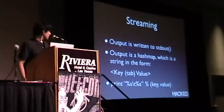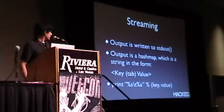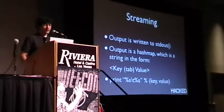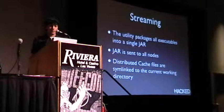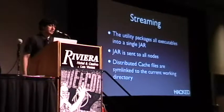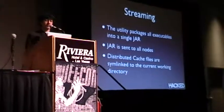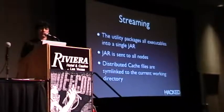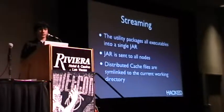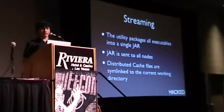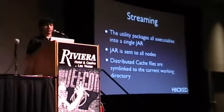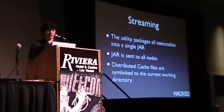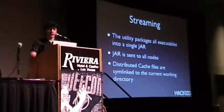Here's another example: a string variable tab string variable passing in key and value. The string utility packages all your files into a single jar, which is sent to all the nodes. Any distributed cache files you want accessible to your streaming job are symlinked to the current working directory on each node, so you have direct access to any distributed cache file.